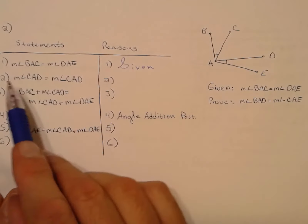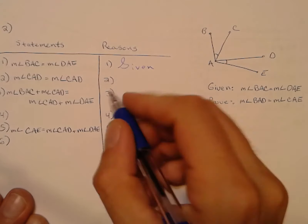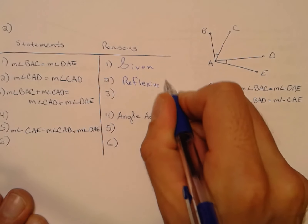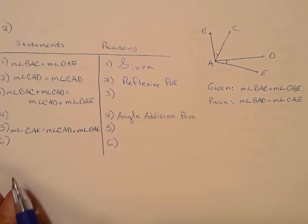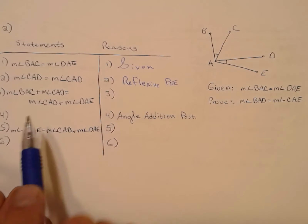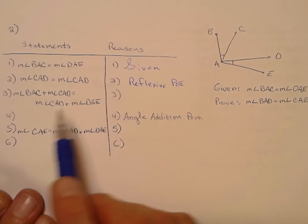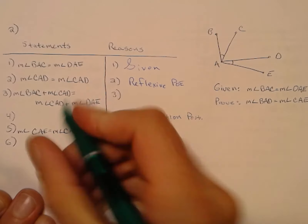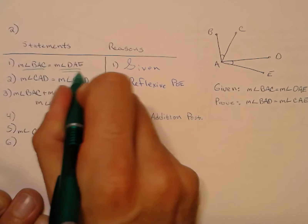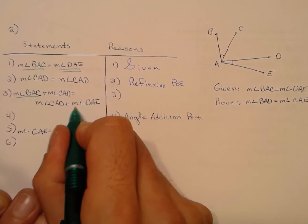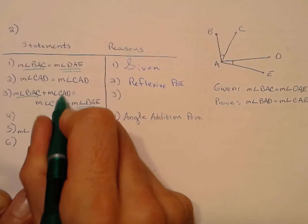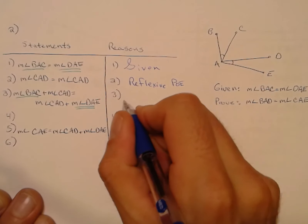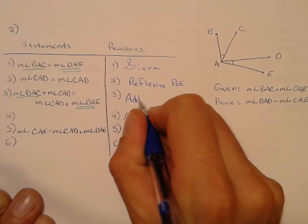Two-column proof number two — we have some given information to start. When something is equal to itself, that is the Reflexive Property of Equality. Statement number three is really statement number one rewritten with the same thing added to both sides — adding CAD to both sides — so that is the Addition Property of Equality.